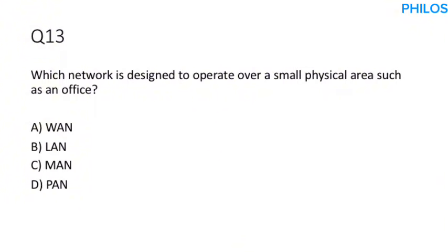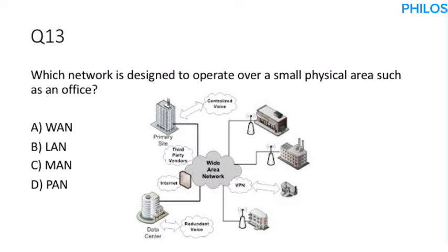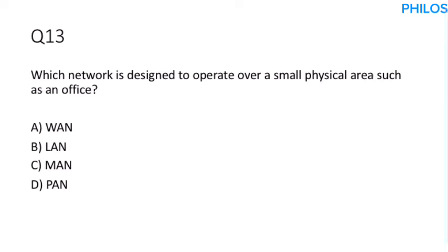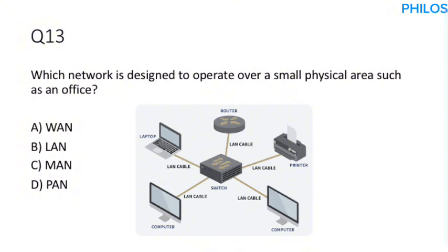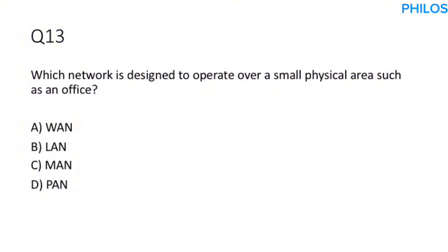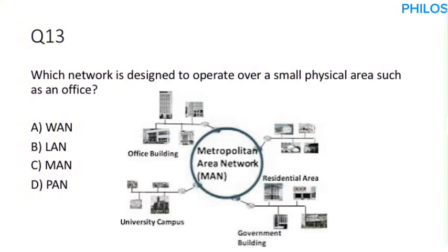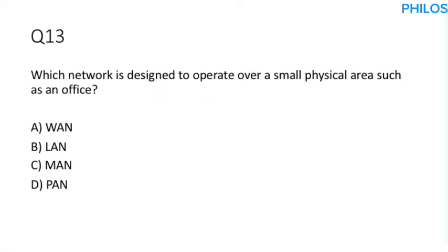Question thirteen: Which network is designed to operate over a small physical area, such as an office? WAN stands for wide area network, LAN stands for local area network, and MAN stands for metropolitan area network. Based on the question — small physical area — the correct answer is LAN, local area network.